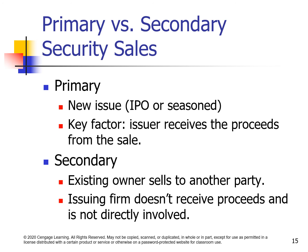Primary markets involve new issues — for example, an initial public offering (IPO) or a seasoned equity offering. The key factor is that the issuer receives the proceeds from the sale. Secondary markets involve existing owners selling to another party. Existing firms do not receive proceeds and are not directly involved.